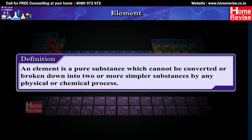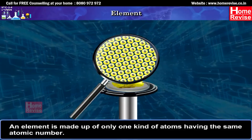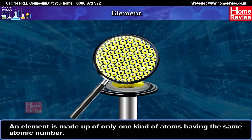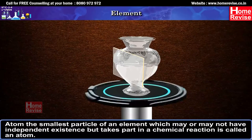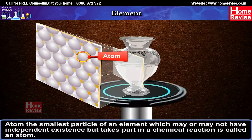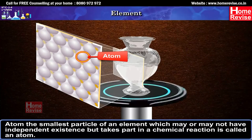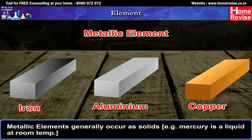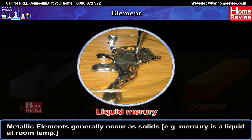Element: An element is a pure substance which cannot be converted or broken down into two or more simpler substances by any physical or chemical process. An element is made up of only one kind of atoms having the same atomic number. An atom is the smallest particle of an element which may or may not have independent existence but takes part in a chemical reaction. Metallic elements generally occur as solids; mercury is an exception, being liquid at room temperature.